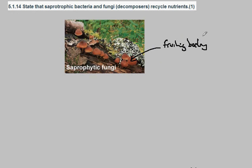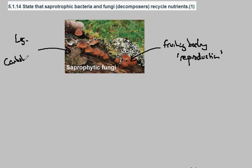This is the actual reproductive structure — the reproduction of the fungi. The food source, the nutrient source for this fungi, is the log here. This is a log tree and it will contain carbohydrate in different forms, proteins, and to some extent lipids.